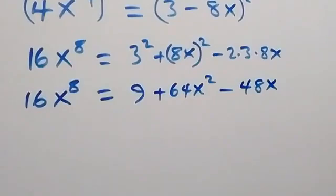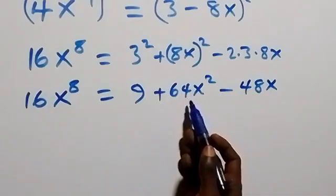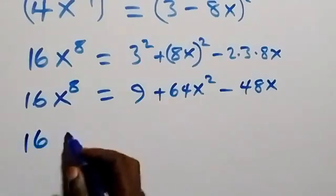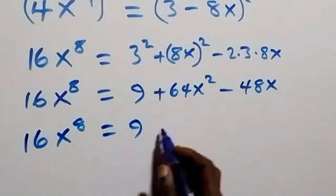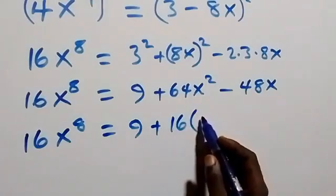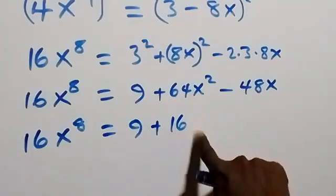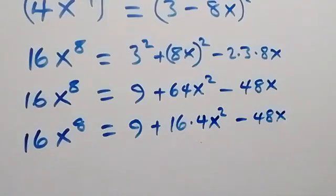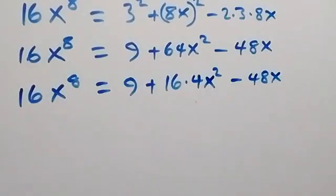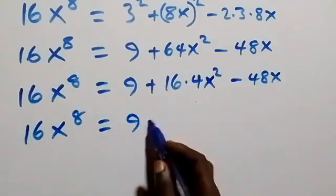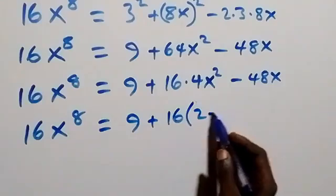Now we can separate what we have here. We write 64x squared as 16 times 4x squared. Then 16x⁸ equals to 9 plus 16 times (4x squared) minus 48x. And since we have the relation 4x squared equals to 2 minus 4x, this becomes 16x⁸ equals to 9 plus 16 times (2 minus 4x).